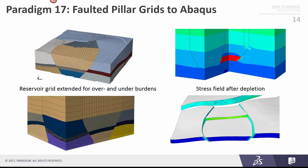In version 17, our release that came out earlier this year, we're allowing you to take the grids from the flow simulator, expand them, and send them to Abacus in essentially one click.